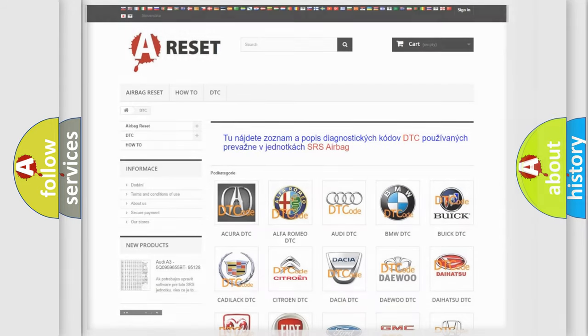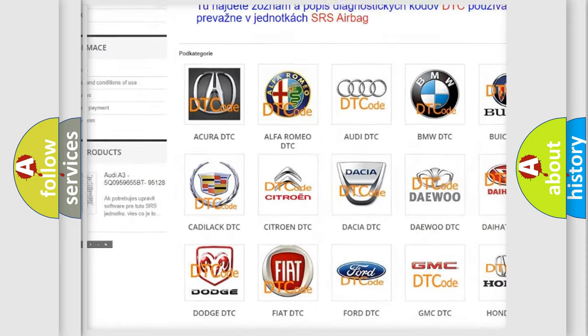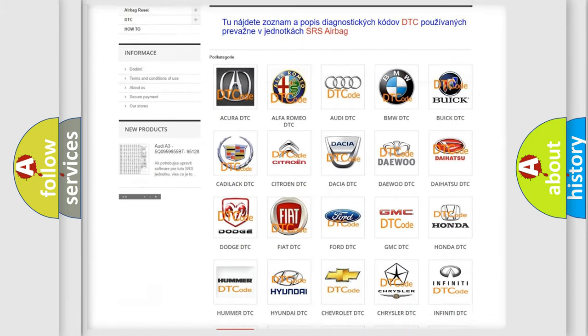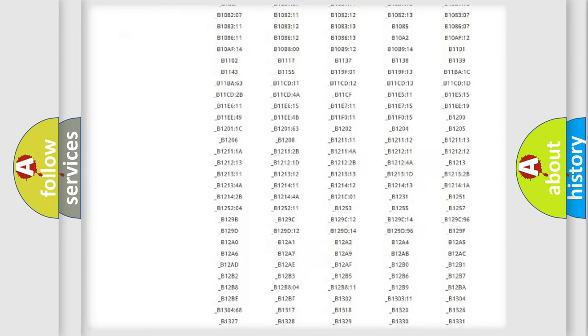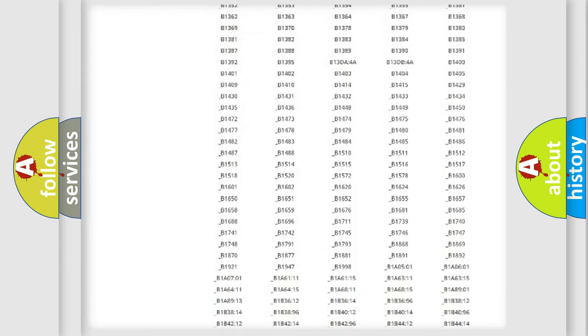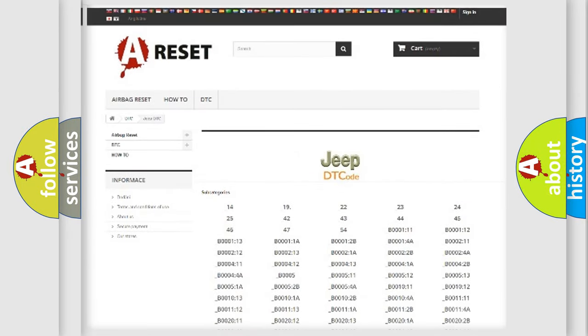Our website airbagreset.sk produces useful videos for you. You do not have to go through the OBD2 protocol anymore to know how to troubleshoot any car breakdown. You will find all the diagnostic codes that can be diagnosed in Jeep vehicles, and also many other useful things.